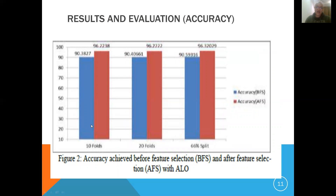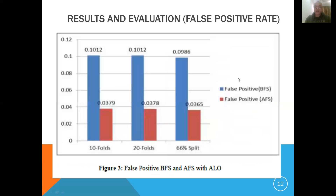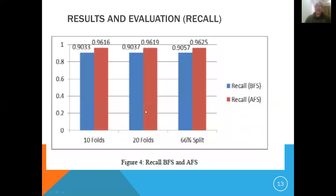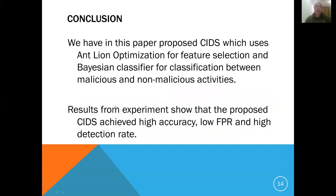This chart shows the accuracy before and after. Before Ant-Lion was applied, the accuracy was around 90% plus. After applying Ant-Lion at 10-fold, 20-fold, and 66-fold split, the accuracy of the model improved significantly. This is also shown for the false positive rate before and after feature selection, and the recall before and after — with before shown in blue and after feature selection in red.